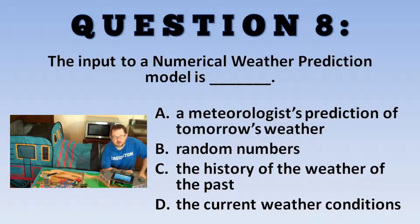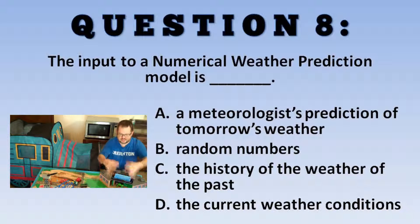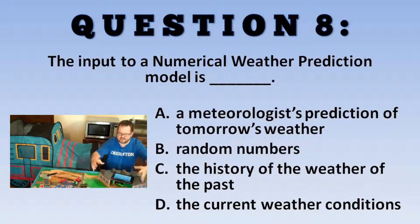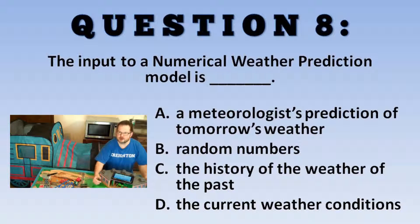The input for a numerical model is the current weather conditions. You take the weather observations from all around the world right now and put them into the model as input. This is the starting point, and then the model simulates how the weather will change over the coming hours, days, years — whatever kind of model it is that you're running.